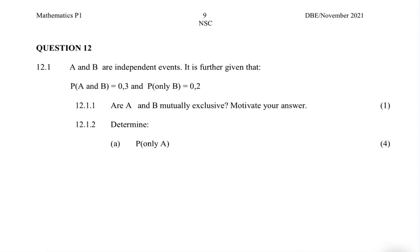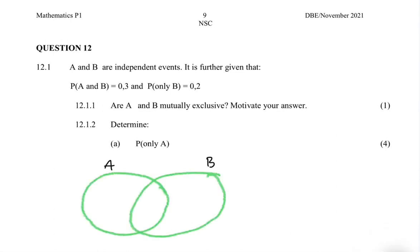Before we solve any problems, we need a Venn diagram — it makes things extremely easy. The probability of only B is 0.2, the probability of A and B is 0.3, the probability of only A we don't know, so let's put x there, and the probability of neither A nor B we put y outside our circles.